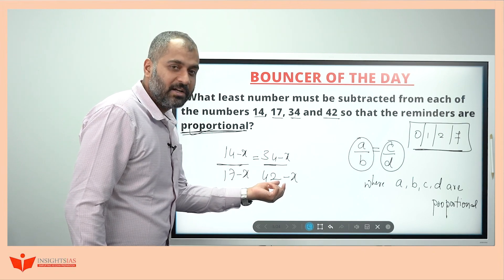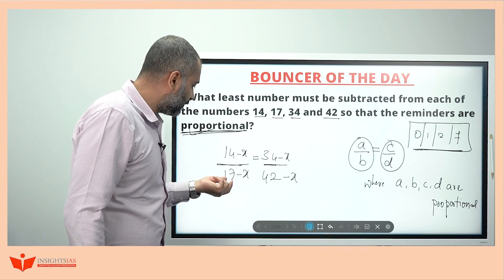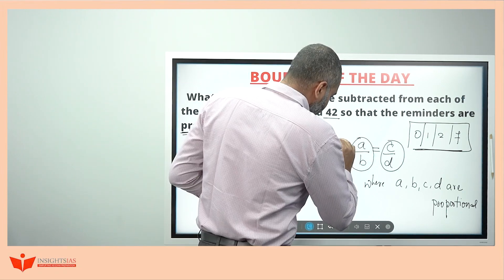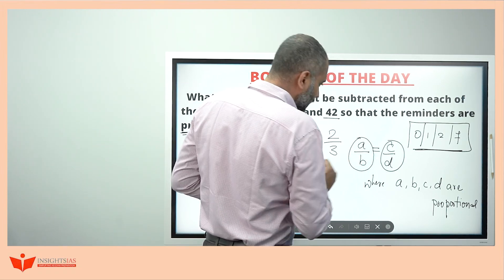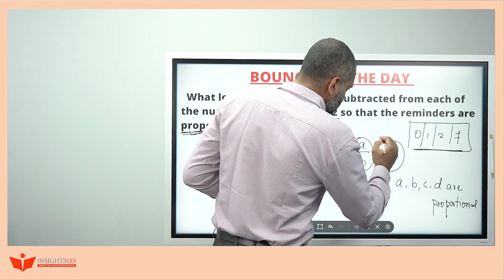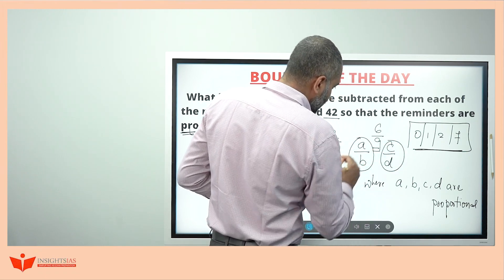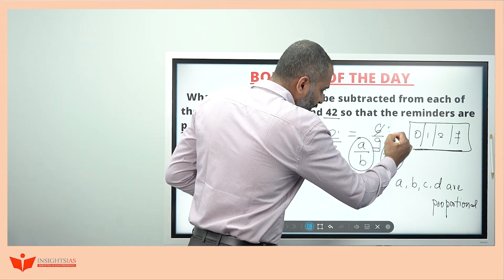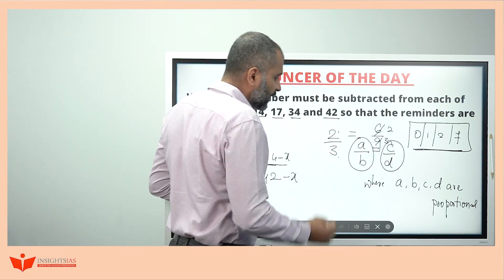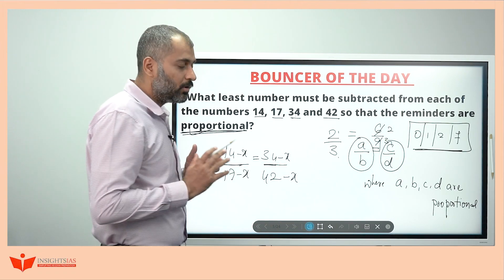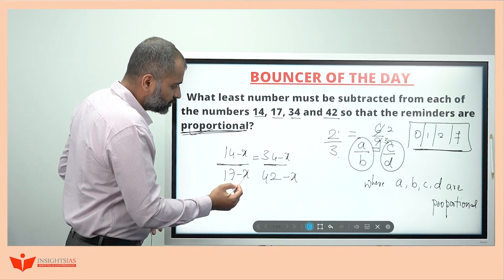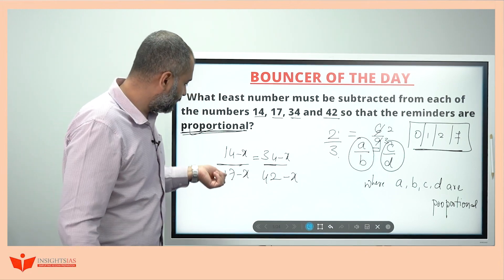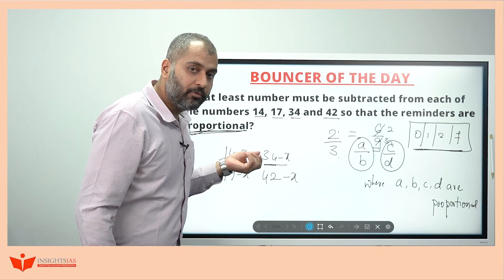Try to put 0 here. If I put 0, this does not make any difference. So 14 by 17 and 34 by 42. For example, A and B values 2 and 3, C and D's value is 6 and 9. See, they are proportionate because 2 by 3, this also if I simplify, this becomes 2 by 3 only. 2 by 3 is equal to 2 by 3. That's what called proportionate. Here if I put 0, 0, 0, 0, so 14 by 17, 34 by 42. It remains same. 14 by 17 is not equal to 34 by 42.